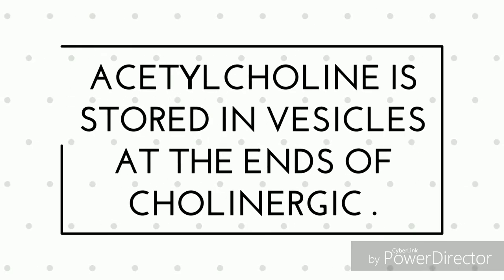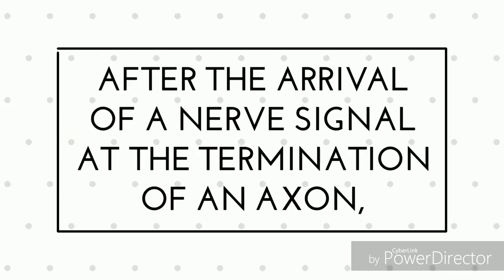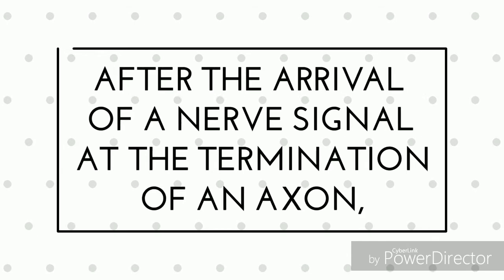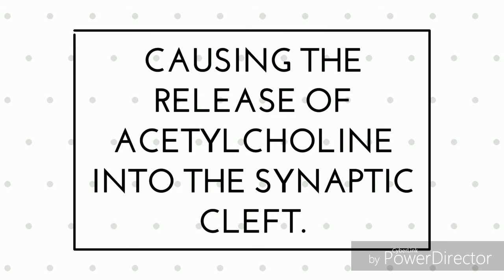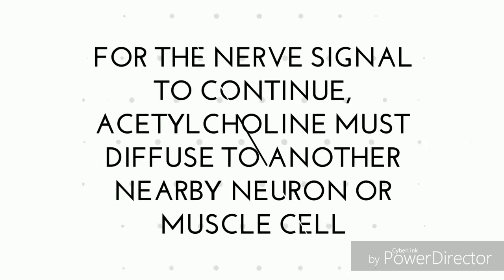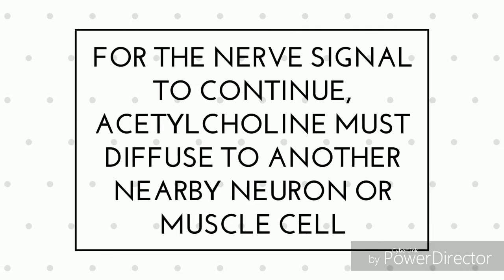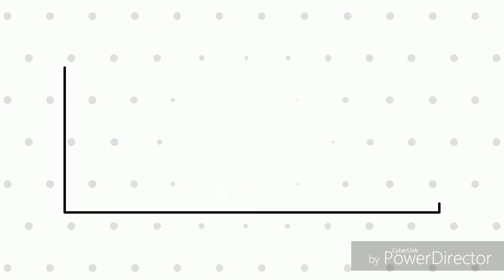Acetylcholine is stored in vesicles at the ends of cholinergic neurons. After the arrival of a nerve signal at the termination of an axon, the vesicles fuse with the cell membrane, causing the release of acetylcholine into the synaptic cleft. For the nerve signal to continue, acetylcholine must diffuse to another nearby neuron or muscle cell, where it will bind and activate a receptor protein.